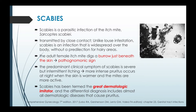Next we have scabies, a parasitic infection of the itch mite Sarcoptes scabiei. This is transmitted by close contact; however, unlike louse infestation, scabies is an infection that is widespread over the body without a predilection for hairy areas. The adult female itch mite digs a burrow just beneath the skin, and this burrow is a pathognomonic sign of scabies. The predominant clinical symptom is severe but intermittent itching, with more intense pruritus occurring at night when the skin is warmer and the mites are more active. Scabies has been termed the great dermatologic imitator, and the differential diagnosis includes almost all dermatologic diseases that can cause pruritus.